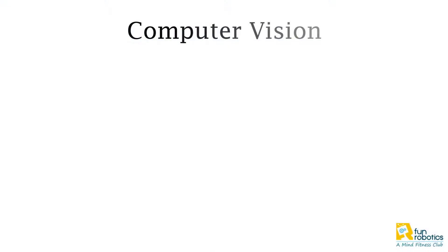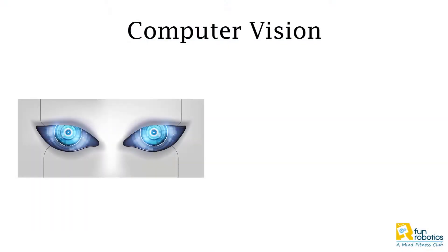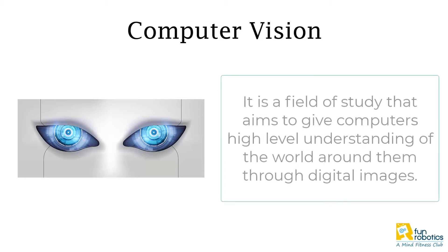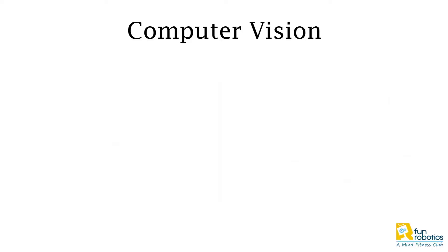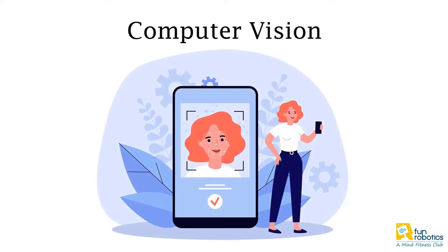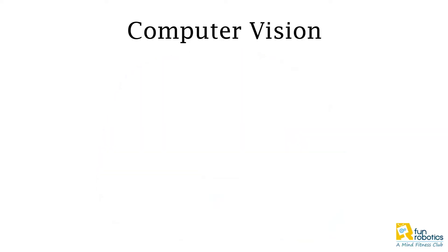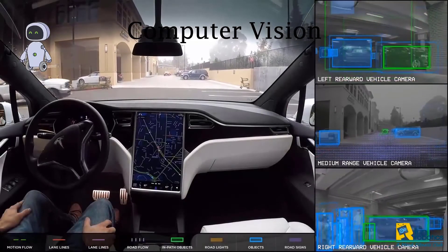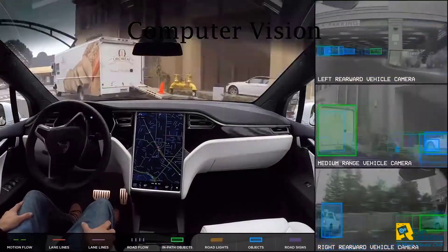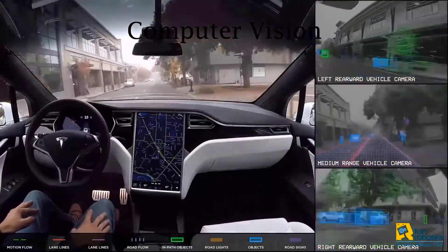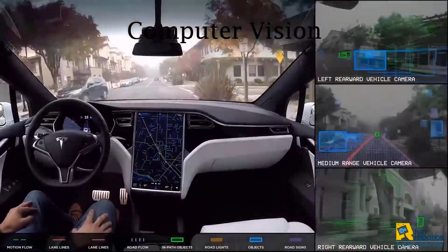Let's start with computer vision. This field is all about making sense of what a machine sees. It is a field of study that aims to give computers a high-level understanding of the world around them through digital images or videos. We can find this technology in our mobile phones when we unlock our phones using the face recognition feature. Another application in this field would be self-driving cars. Without AI algorithms, self-driving cars would not be able to identify where the road is and recognize all the obstacles in front of it.